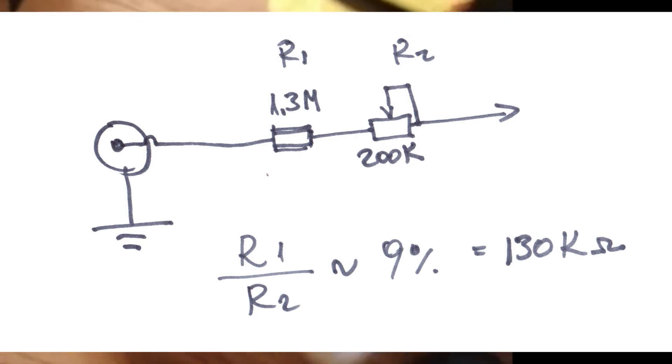it's a trimmer, a variable resistor, exactly at the input, before the input in the oscilloscope.